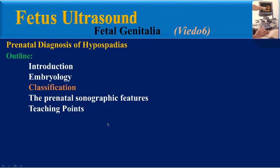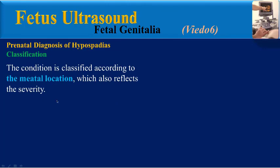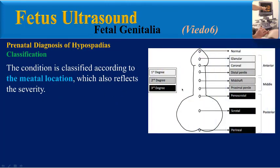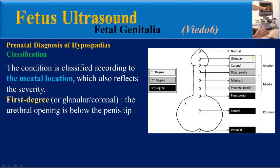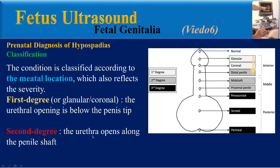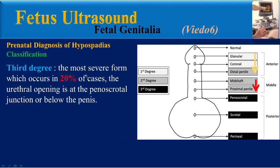Classification of hypospadias: the condition is classified according to meatal location, which also reflects severity. First degree, or glanular/coronal type: the urethral opening is below the penis tip. Second degree: the urethra opens along the penile shaft. Third degree, the most severe form occurring in 20% of cases: the urethral opening is at the penoscrotal junction or below the penis, at scrotal or perineal areas.